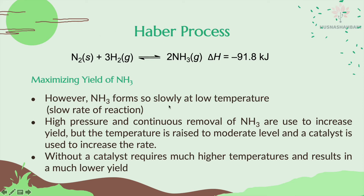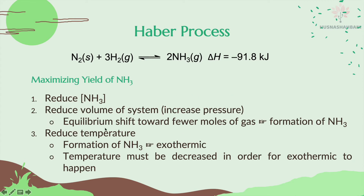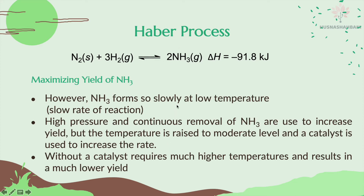However, NH₃ forms very slowly at low temperature. We know we need to reduce temperature to have more NH₃, but the reaction is very slow — the rate of reaction is very slow. So high pressure and continuous removal of NH₃ are used to increase the yield. But for temperature, it needs to be raised to a moderate level and a catalyst is used to increase the rate.